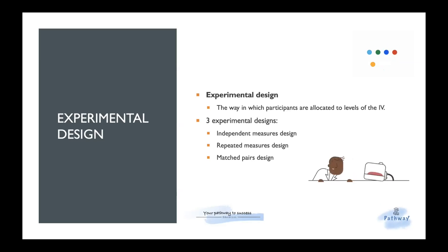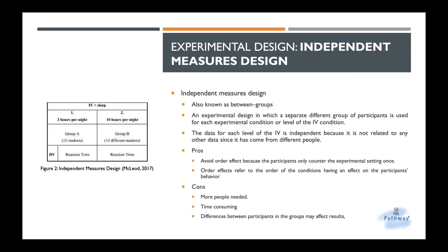Experimental design is the way which participants are allocated to levels of independent variables. I don't get it. What does it mean by allocated? So basically the experimental design is the way that researchers place the participants into which conditions. Can you give me one example? Well, there are three types. So why don't we take a look at each one and then I'll give you examples.